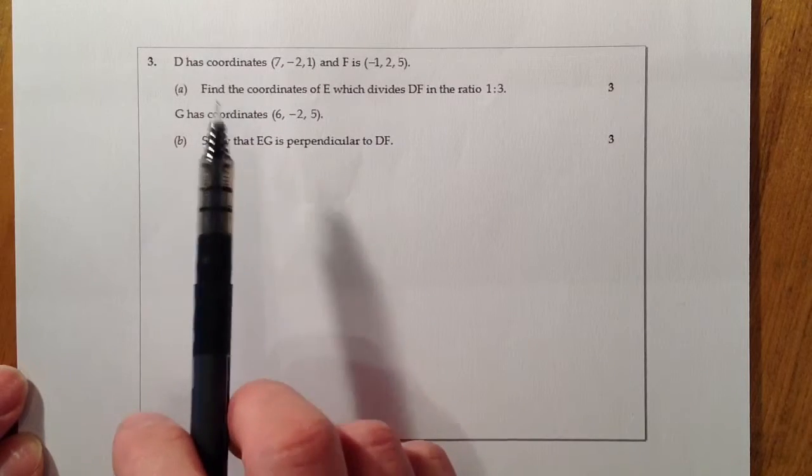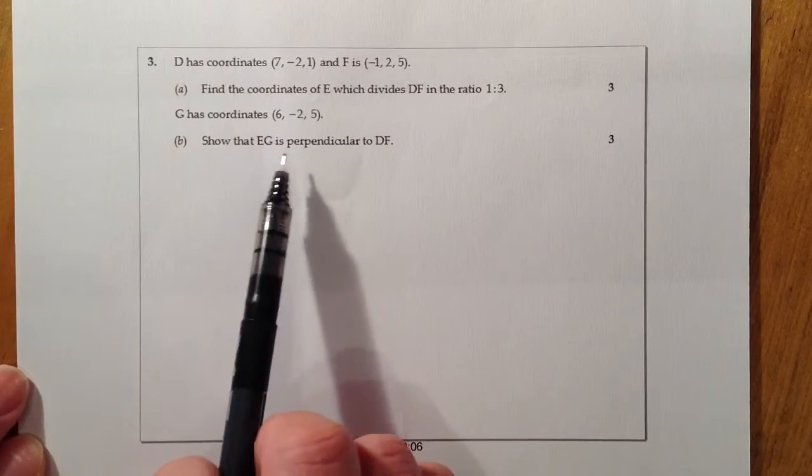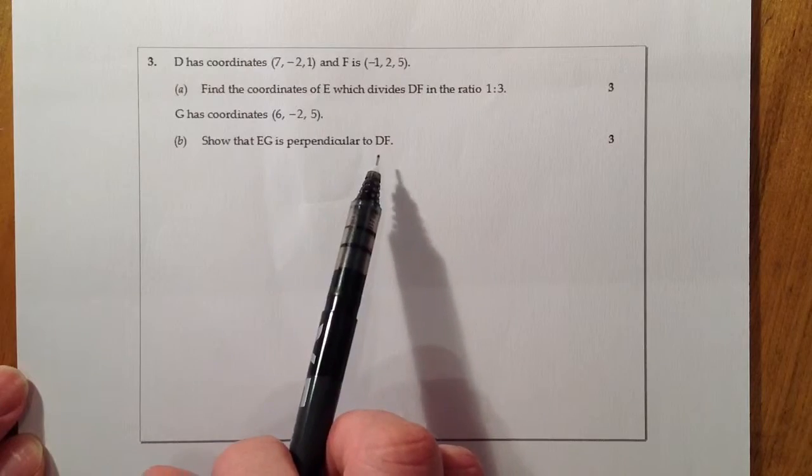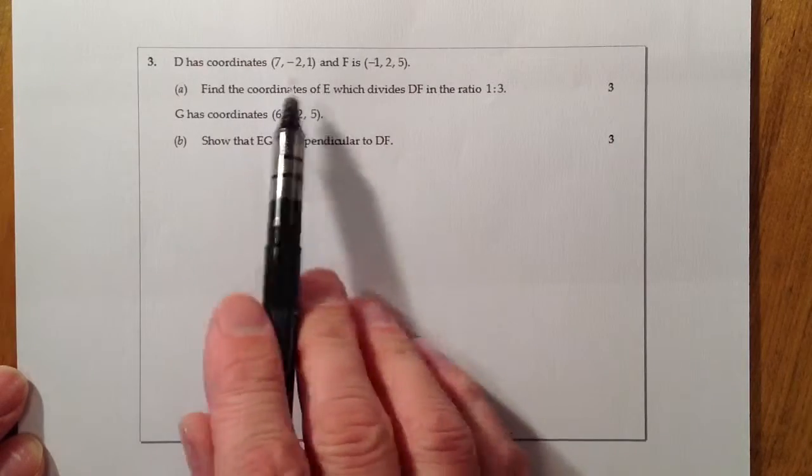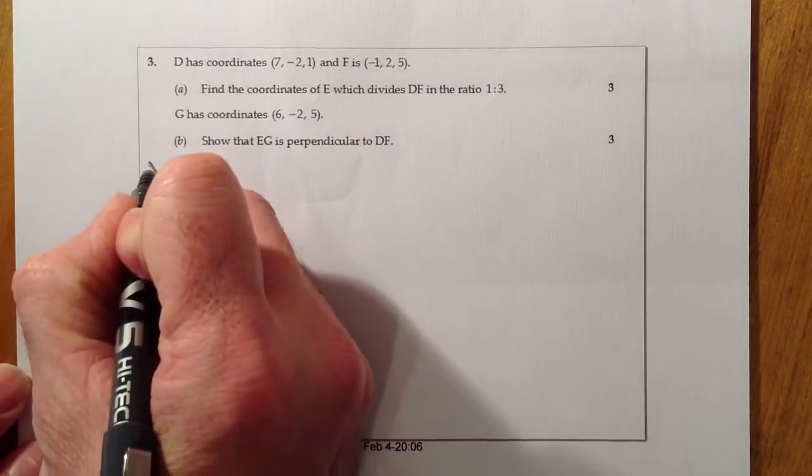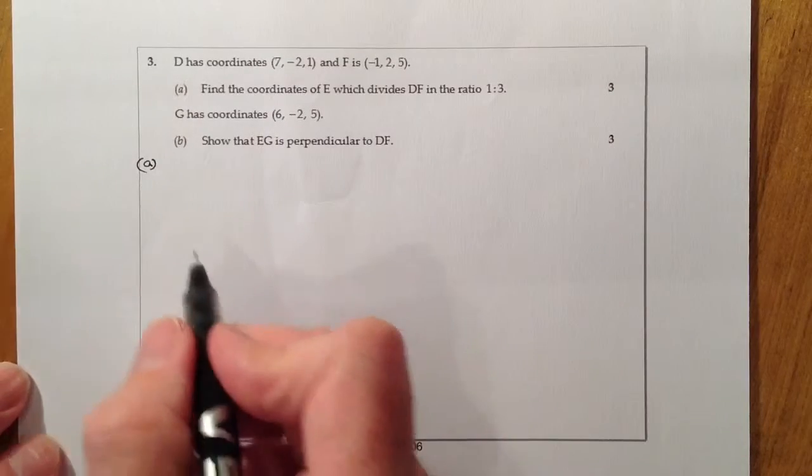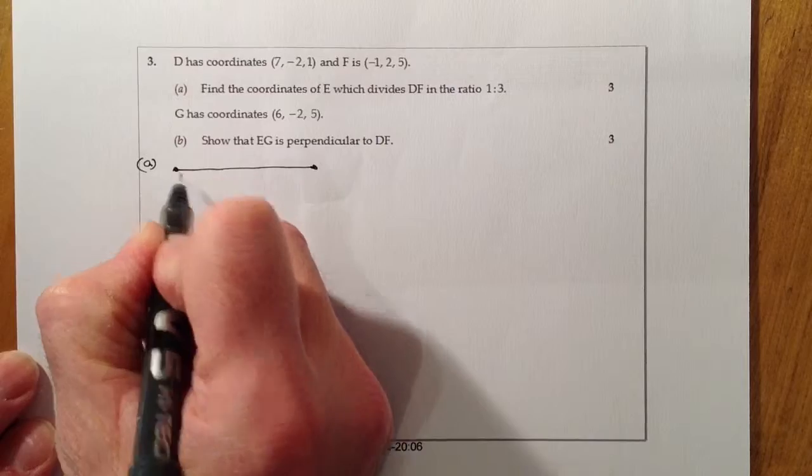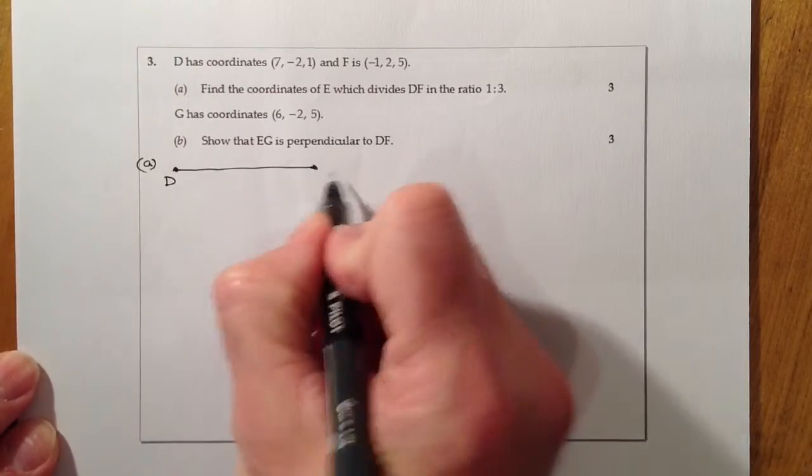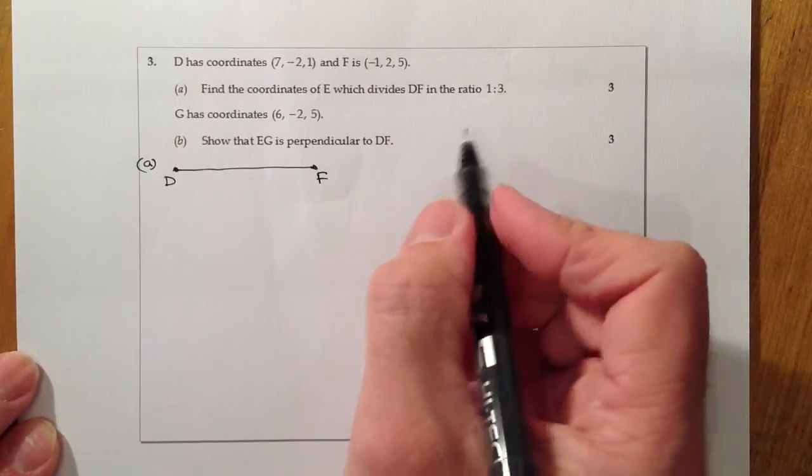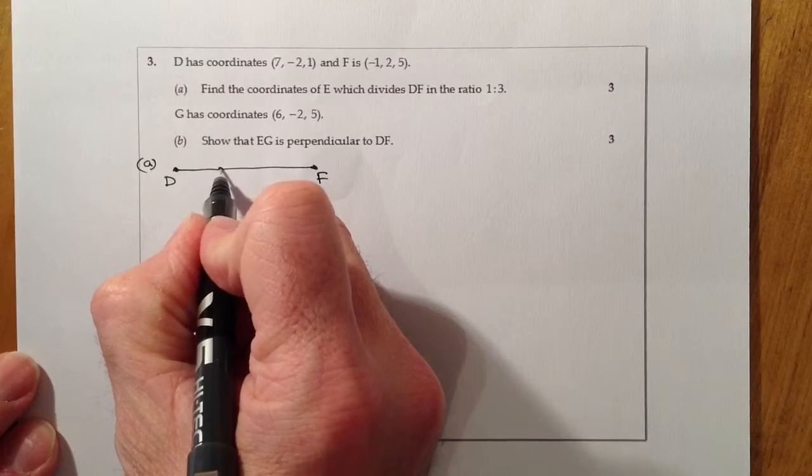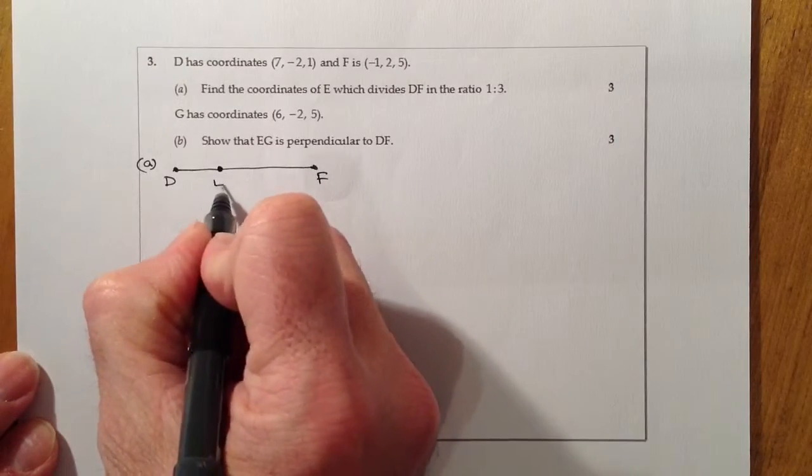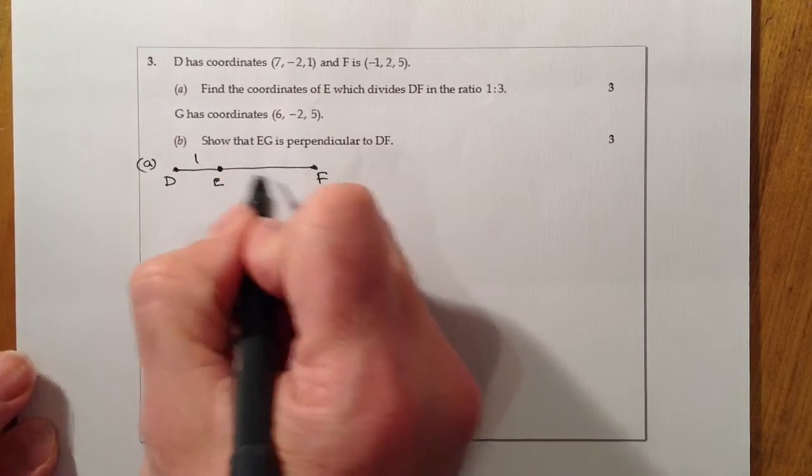Let's tackle part (a) first. Normally when tackling these questions, I would draw a rough line to get an idea of what I'm looking at. There's D and there's F, and E divides this line into one and three parts in that ratio.